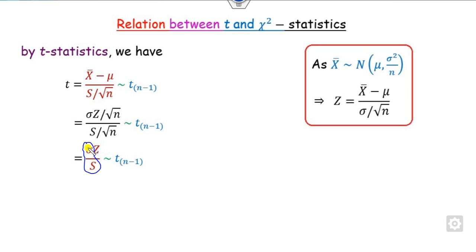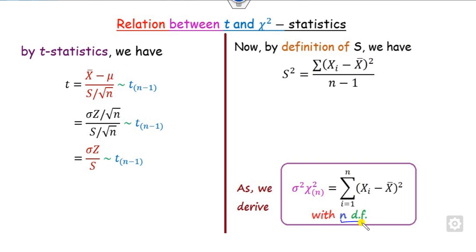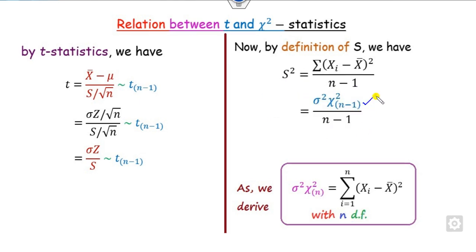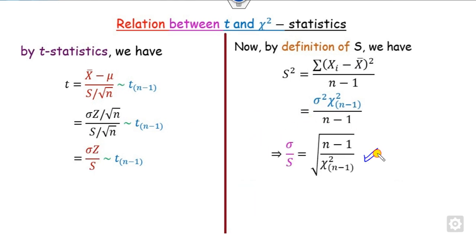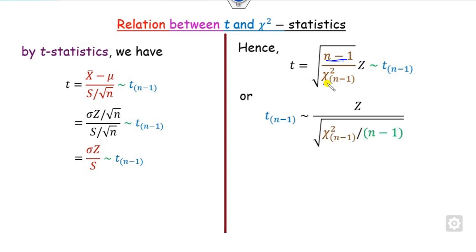Now we find the value of sigma over S. Starting with the definition of S-squared, which is the unbiased estimator with n minus 1 degrees of freedom, we can replace n minus 1 for the degree of freedom and compute the numerator value. From this expression we can easily find the value of sigma over S. Substituting this value back, we get the result shown here, and we can also simplify it to show the associated degrees of freedom.